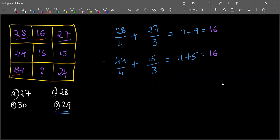So here the first number is 84, 84 divided by 4, and the last number is 24 divided by 3. 21 plus 8 which is 29.